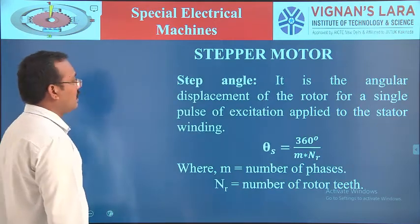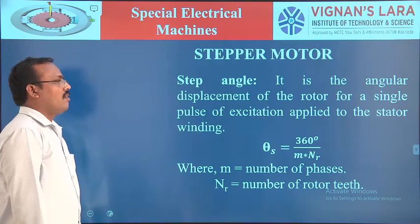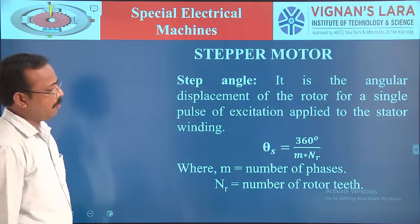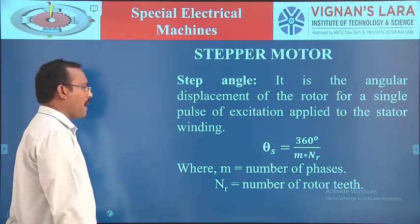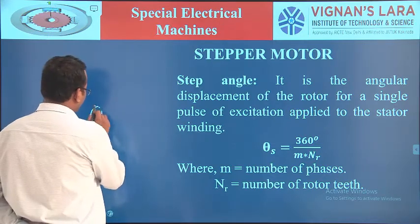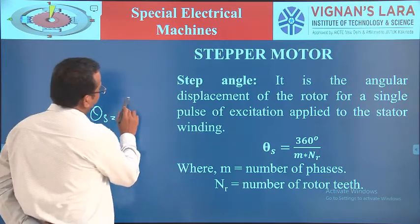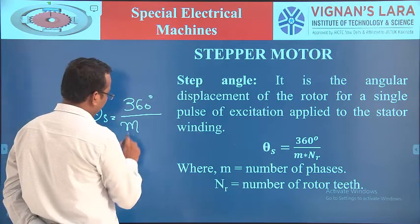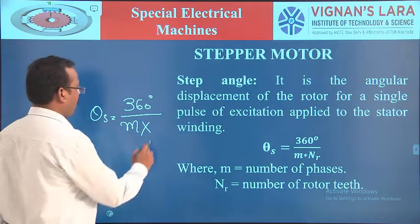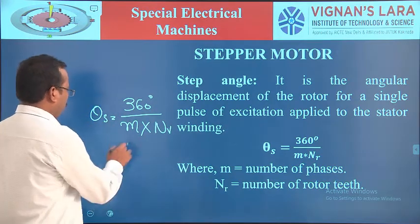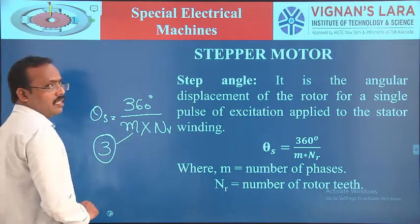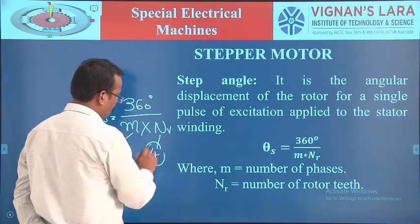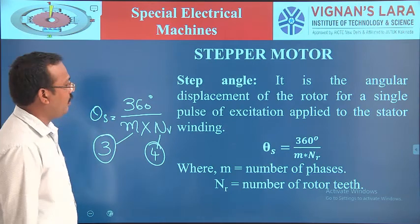The first one is step angle. The step angle is the angular displacement of the rotor for a single pulse of excitation applied to the stator winding. The step angle θs is defined as: θs = 360 / (m × Nr), where m is the number of phases and Nr is the number of rotor teeth. For example, a three-phase stepper motor having four rotor teeth — substitute to find the step angle.